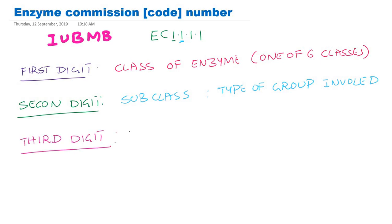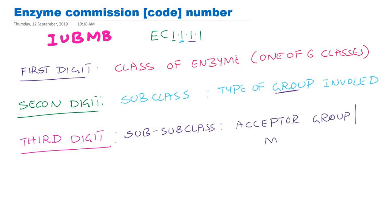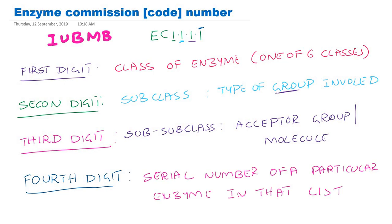The third digit is called the sub-subclass. The third digit represents the acceptor group involved in that particular reaction — so the second digit tells us which group is involved, and the third digit tells us what the acceptor molecule or compound is for that enzymatic reaction. The fourth and final digit represents the serial number of that particular enzyme within that particular list. For example in EC 1.1.1, the last digit '1' means it is the first enzyme in that series; '2' would be the second enzyme, and so on.